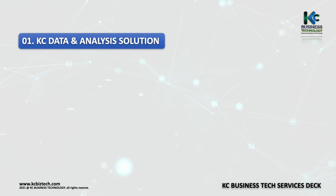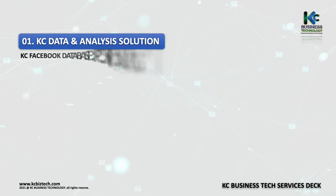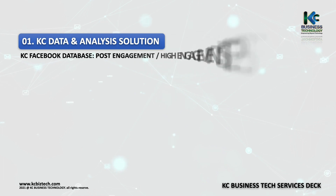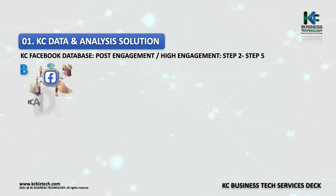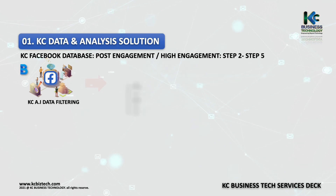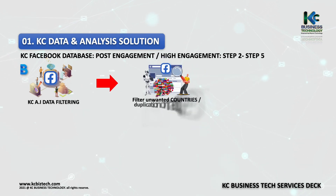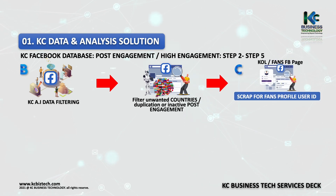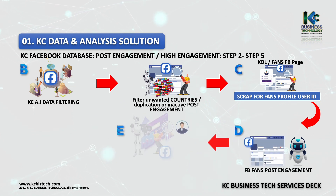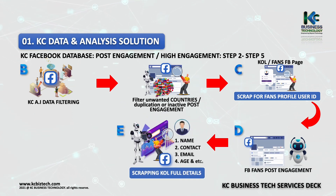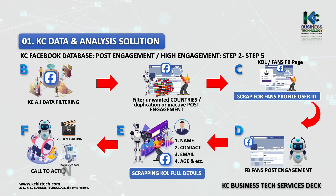KC Facebook Database Post Engagement / High Engagement — Step 2 to Step 5. B. KC AI Data Filtering: Filter unwanted countries, duplication, or inactive post engagement. C. Scrap for Fans Profile User ID. D. FB Fans Post Engagement. E. Scrapping KOL Full Details. F. Call to Action.